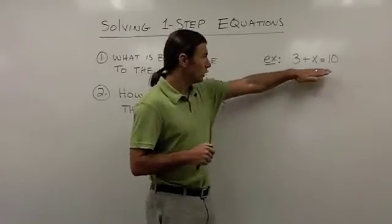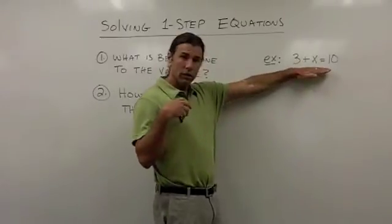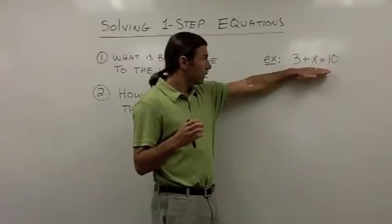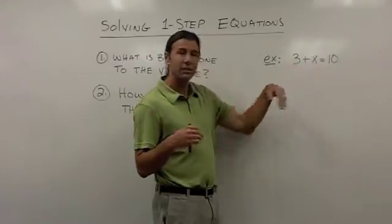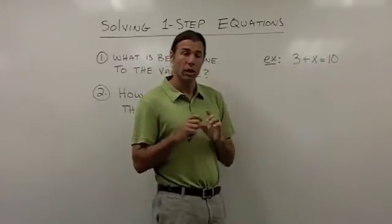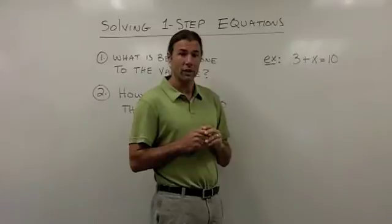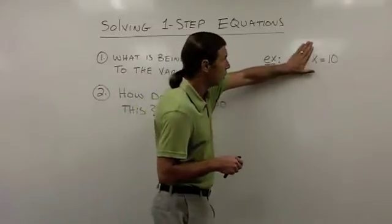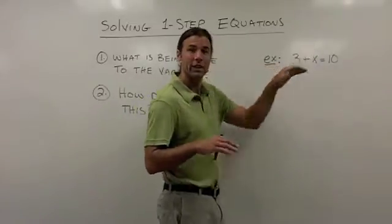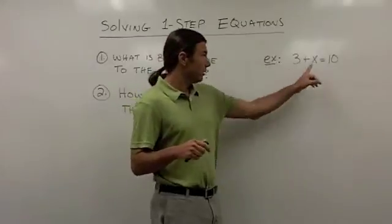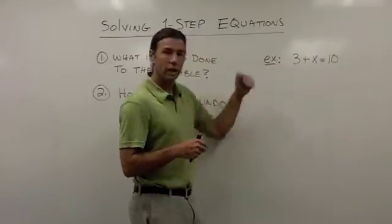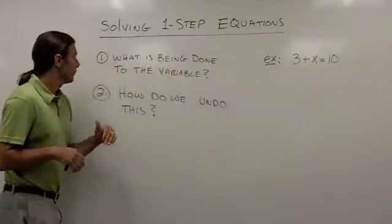When we solve an equation, the technique I'm going to show you is called isolating the variable, which means getting the variable all alone on one side of the equal sign. If I can get this variable all alone on one side of the equal sign, it's going to be very easy to tell what the solution needs to be. So now let's go ahead and take a look at our steps.